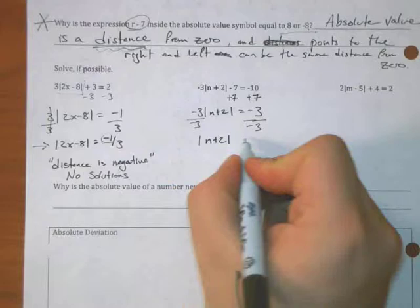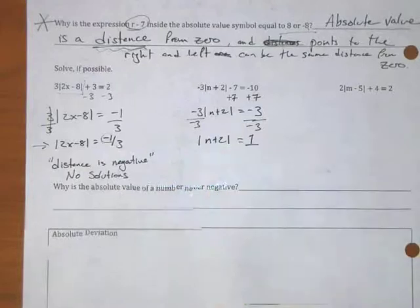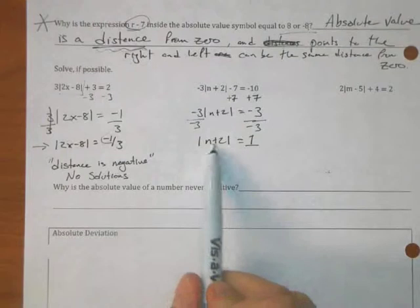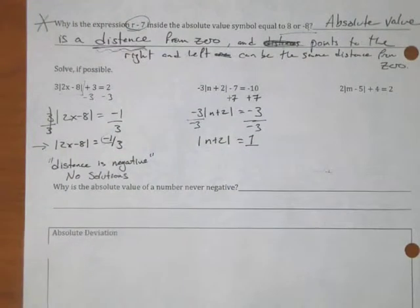Oh, so n plus 2 here, oh that's equal to positive 1. Oh boy, that's actually good. That's a good thing. So this thing is a distance of 1 from 0. Okay, so then what n's make this true? How are we going to finish solving this?